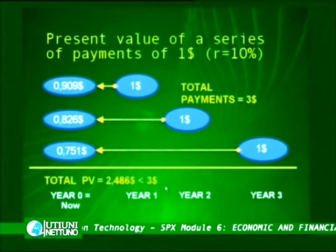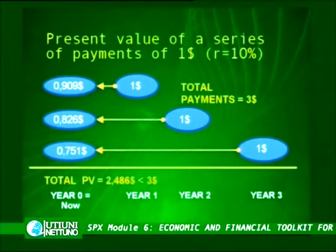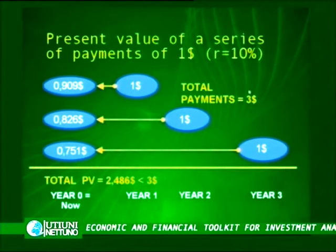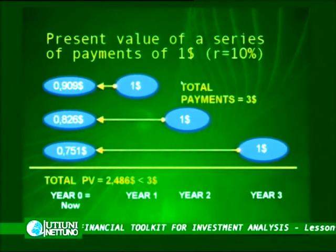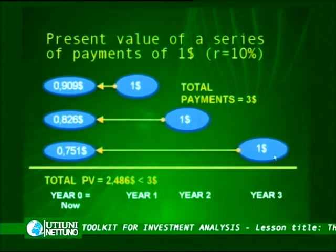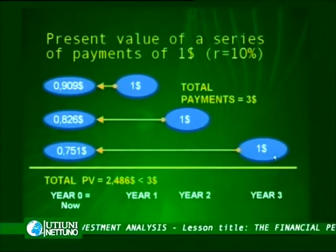This total present value of $2.486 is lower than $3, which is the total payment received over the three periods. Given the nature of the discounting process and the preference for earlier cash flows, the present value of a series of payments will clearly be lower than the total payments received during this period. This is an important result to keep in mind for what follows.